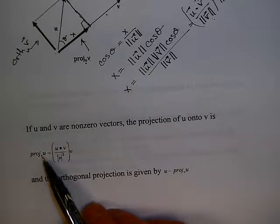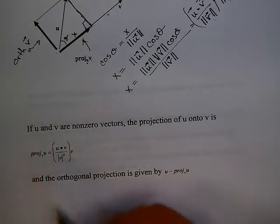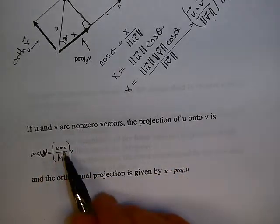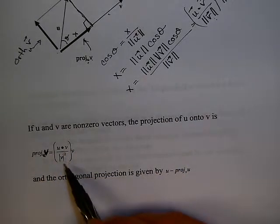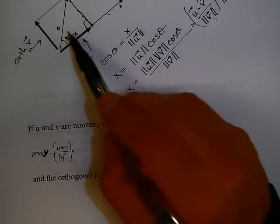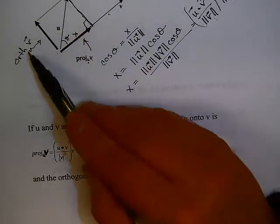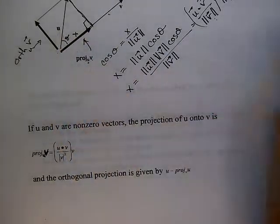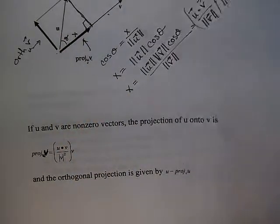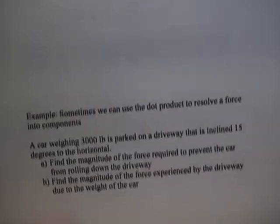This scalar x gives the length of the projection vector. To get the actual vector, multiply x by the unit vector in the direction of v, which is v over magnitude of v. This gives the formula for the projection of u onto v: u dot v over magnitude of v squared, times v. The orthogonal projection is then u minus this projection.